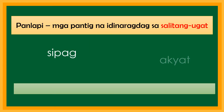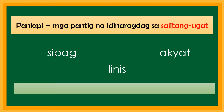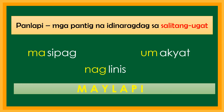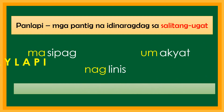Sipag, akyat, linis — ito ay mga salitang ugat. Kapag dinagdag natin ang panlaping ma, um, nag, sila ay magiging anyong may lapi. May lapi.